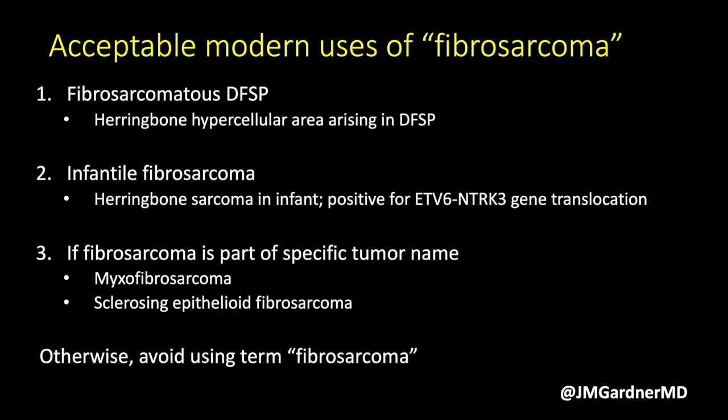Also, if fibrosarcoma is part of a proper specific tumor name — like myxoid fibrosarcoma or sclerosing epithelial fibrosarcoma — these are not descriptive terms but actual proper names for specific tumor types, neither of which is really related to so-called adult-type fibrosarcoma. Sclerosing epithelial fibrosarcoma is probably on a spectrum closely related to low-grade fibromyxoid sarcoma, and myxoid fibrosarcoma is more like a myxoid variant of undifferentiated pleomorphic sarcoma. In my opinion, if it's not one of those three situations, I basically don't use the term fibrosarcoma — that would be my advice, but I'll let you decide whether to take it or leave it.